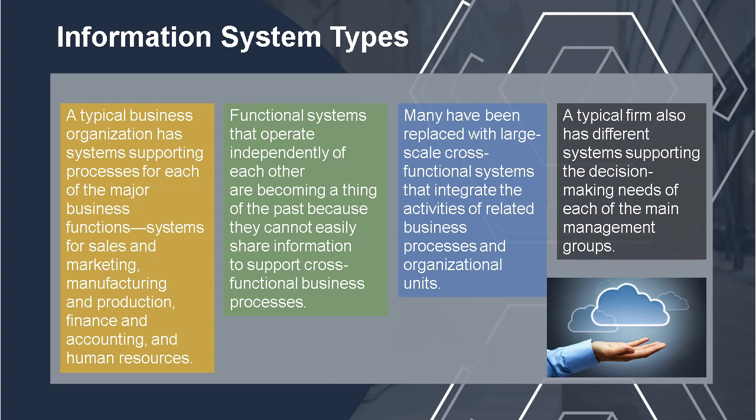Within a business, different people have different interests, specialties, and levels within an organization. No single system can provide all the information for all the needs of a company. A typical business organization has systems supporting processes for each major business function — sales and marketing, manufacturing and production, finance and accounting, and human resources. Functional systems that operate independently of each other are becoming a thing of the past because they cannot easily share information to support cross-functional business processes.